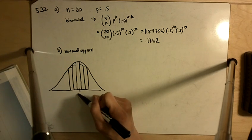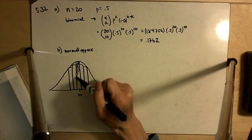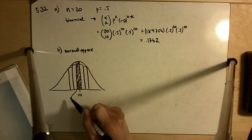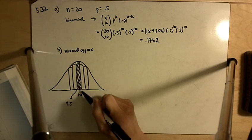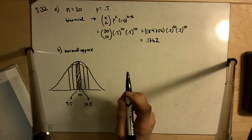This is centered at 10. So when we want to find this area here using the continuity correction, we're going down to 9.5 and up to here, up to 10.5.